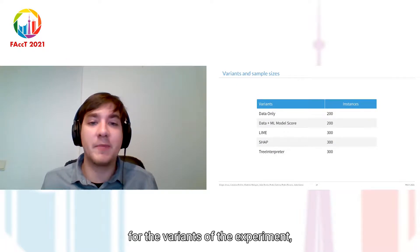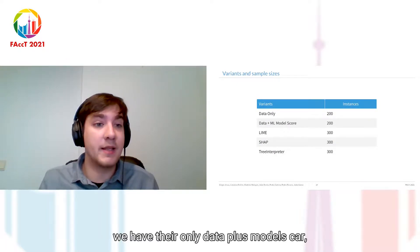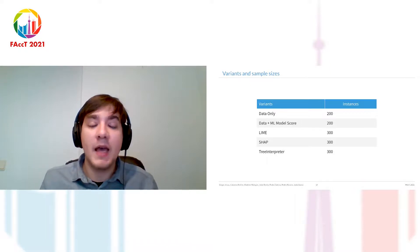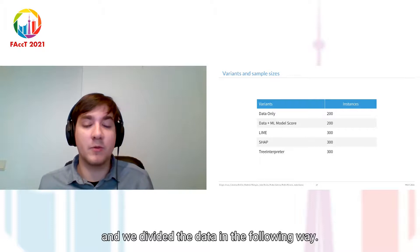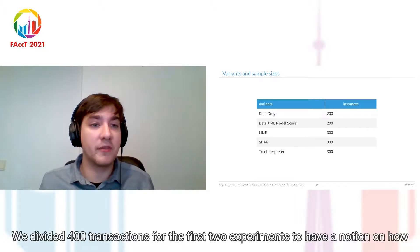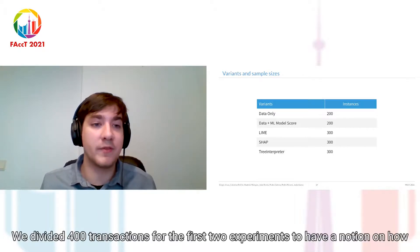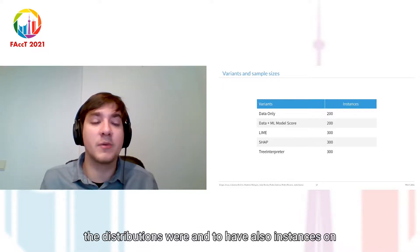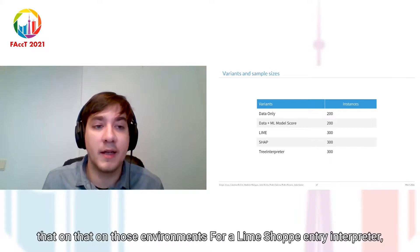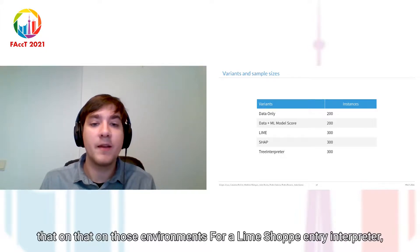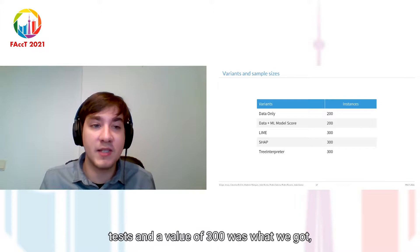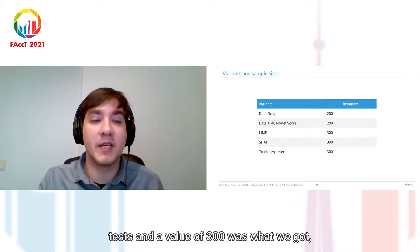For the variants of the experiment, we have data only, data plus model score, and a variant for each explainer. We divided the data as follows: 400 transactions for the first two variants to establish baseline distributions. For LIME, SHAP, and TreeInterpreter, we calculated the ideal sample size based on our statistical test parameters, and a value of 300 was what we obtained.